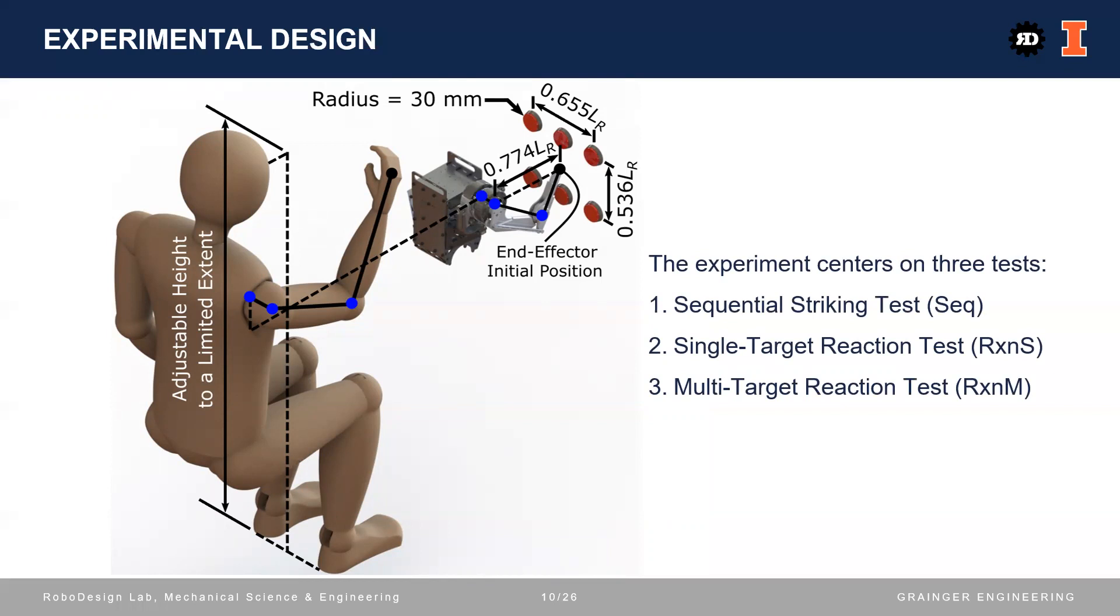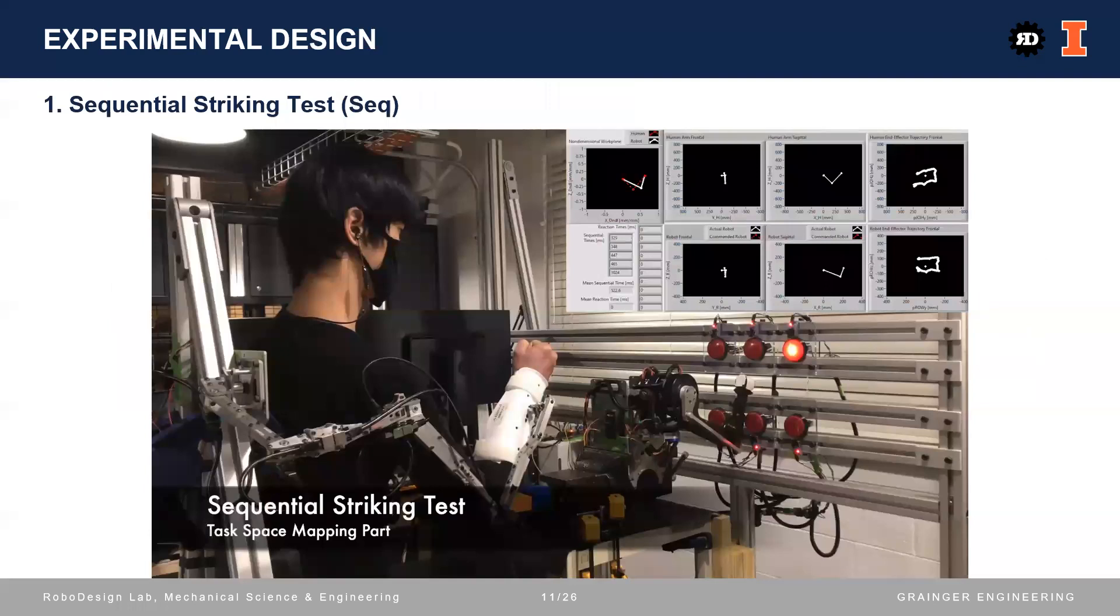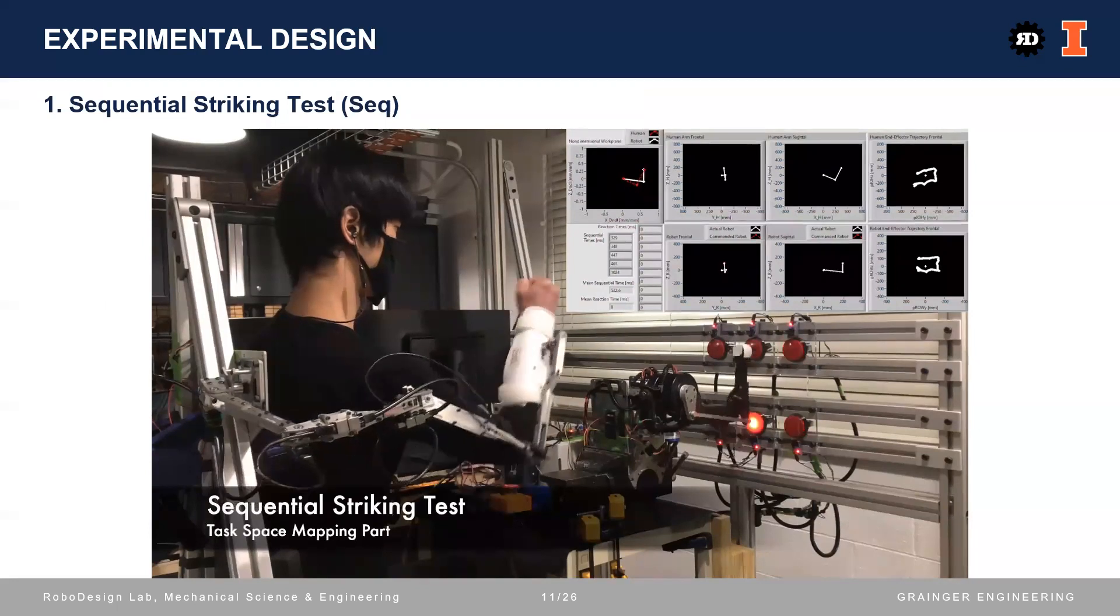They are sequential striking test, single-target reaction test, and multi-target reaction test. In a trial of sequential striking test, the subject will hit the top three targets from left to right, and then the bottom three from right to left as fast as possible. The time between two adjacent hits is recorded, producing five reaction times per trial. Now let's see the test in action.